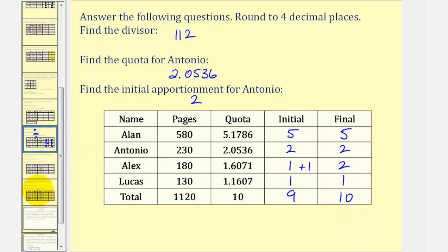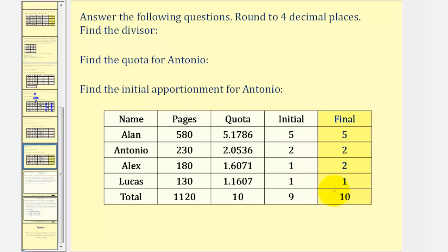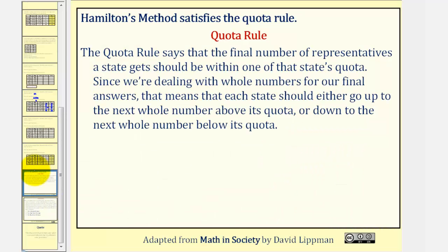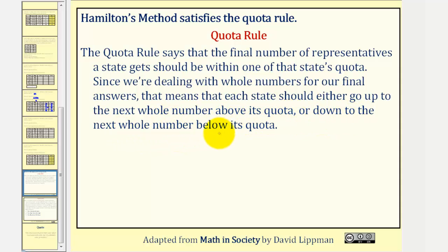And here's the result in a nice table. Hamilton's method does satisfy what's called the quota rule. The quota rule says that the final number of representatives a state gets should be within one of that state's quota. Since we're dealing with whole numbers for our final answers, each state should either go up to the next whole number above its quota, or go down to the next whole number below its quota.